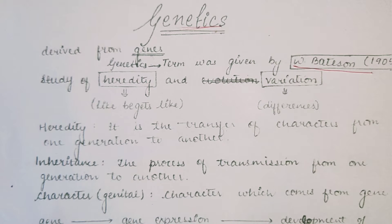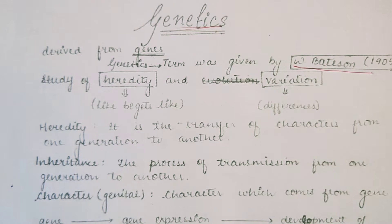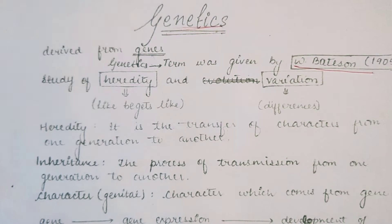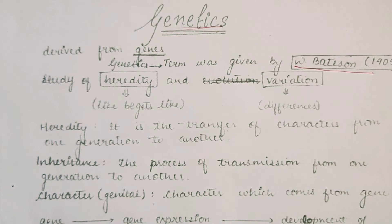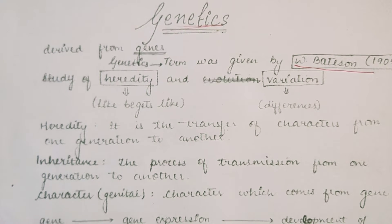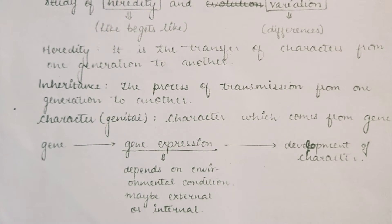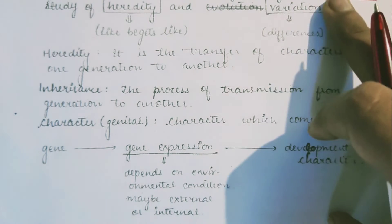Heredity means genes are transferred from parents to offspring of the same type. That is called heredity. But variation is the differences — I will be a little different from my parents. So, what do you mean by genetics? Genetics is a combination of heredity and variation.